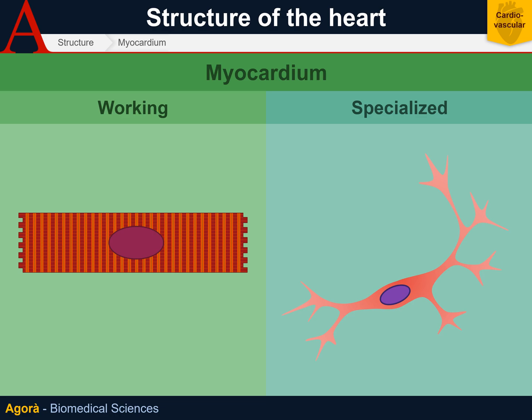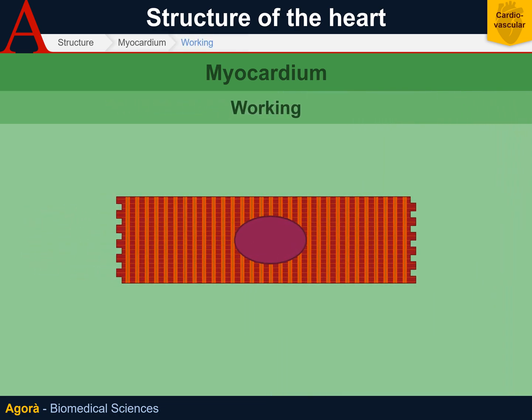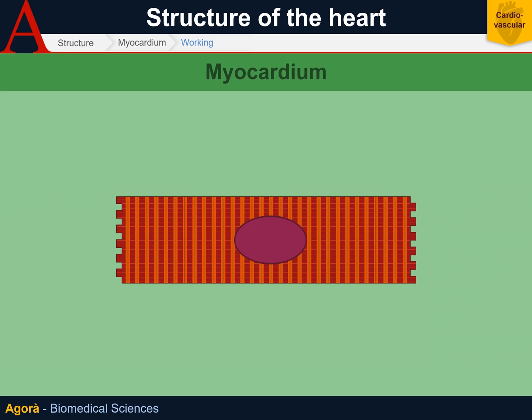In this video we are going to conduct a cytological analysis of the myocardium. The working myocardium is made up of big cells — not as big as those of striated muscles, but not as small as smooth muscle cells either — approximately 20 microns thick and 100 microns wide, with one nucleus in a central position and some striations.